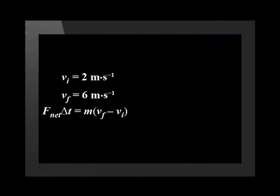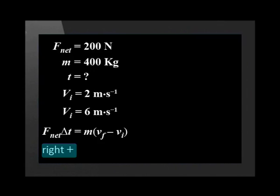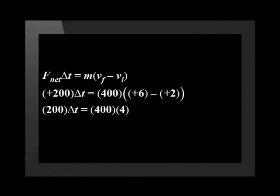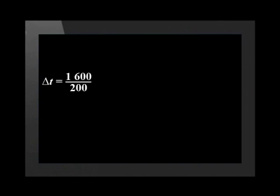Let's substitute this into our formula. And remember we chose right as positive. So positive 200 times change in time equals 400 times (positive 6 minus positive 2). This equals 400 times 4. We find that change in time equals 1600 divided by 200, which gives us change in time equal to 8 seconds.